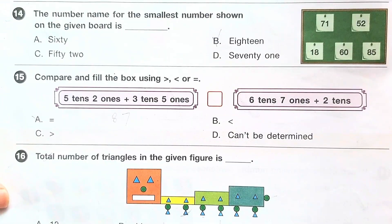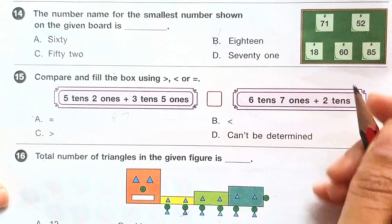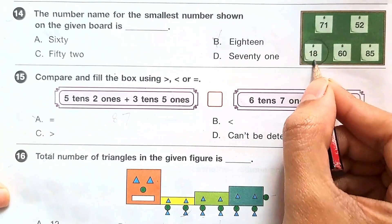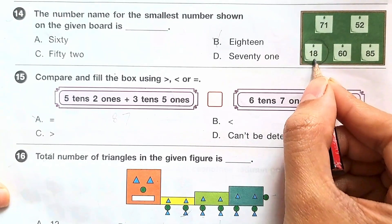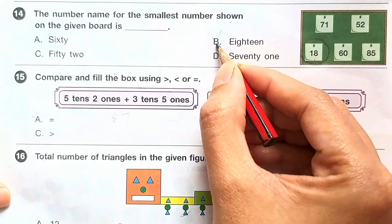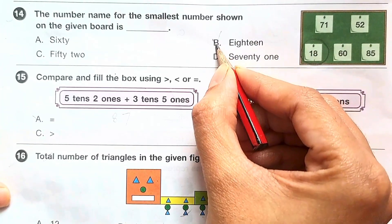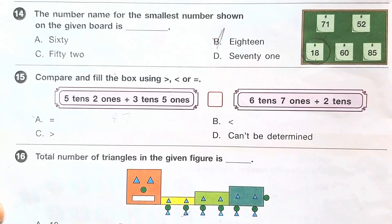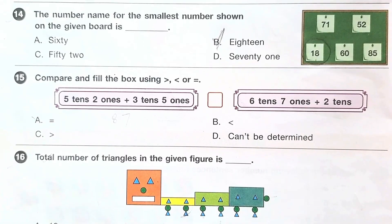Question number 14: the number name for the smallest number shown on the given board. The smallest number is 18, so the number name for 18 is given. The answer is option B.